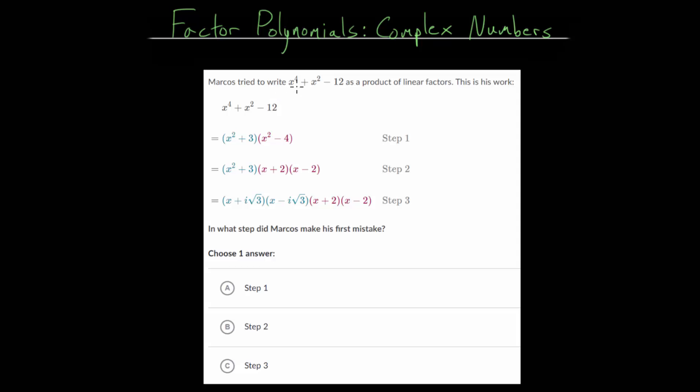In this problem, Marcos tried to rewrite x to the fourth plus x squared minus 12 as a product of linear factors, and this is his work to do so. We're starting with this fourth-degree polynomial, and you can notice that this is a special type where we're missing the cubic term and the first power term. When that's the case, we can use substitution to factor this.